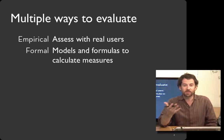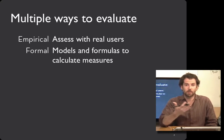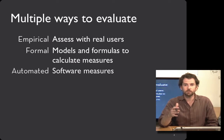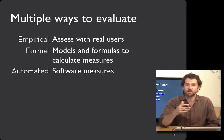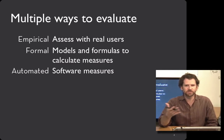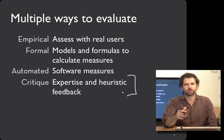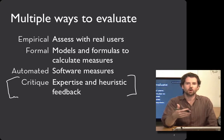It's also possible to have formal methods where you're building a model of how people behave in a particular situation, and that enables you to predict how different user interfaces will work. Or, if you can't build a closed-form formal model, you can also try out your interface with simulation and have automated tests that can detect usability bugs and ineffective designs. This works especially well for low-level stuff; it's harder to do for higher-level stuff. And what we're going to talk about today is critique-based approaches where people are giving you feedback directly based on their expertise or a set of heuristics.